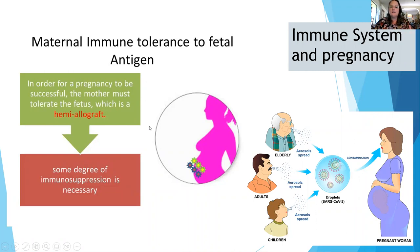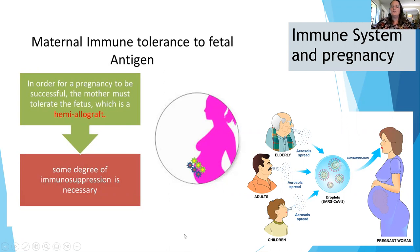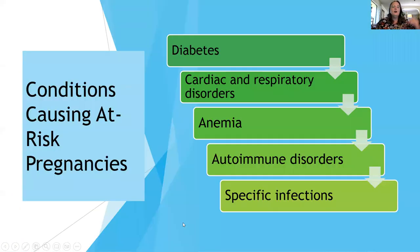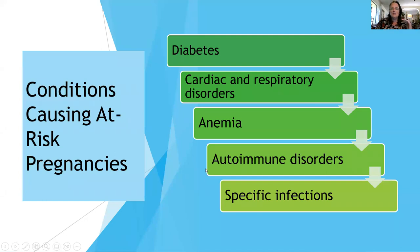The immune system is dampened during pregnancy so the mother's body does not attack the fetus. This immunosuppression makes her at higher risk for all infections. Other conditions that can cause at-risk pregnancies include diabetes, cardiac or respiratory disorders, anemia, autoimmune disorders, and specific infections. Interestingly, some autoimmune disorders actually improve a little during pregnancy because of that immunosuppression.